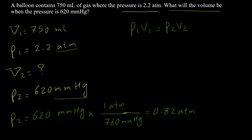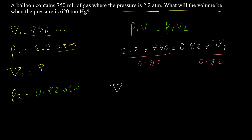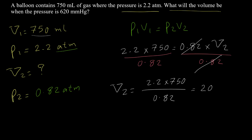Now with p2 = 0.82 atm, we can solve the problem. p1·v1 = p2·v2 gives: 2.2 × 750 = 0.82 × v2. Dividing both sides by 0.82, v2 = (2.2 × 750) / 0.82, which equals 2012 milliliters, since v1 was in milliliters.